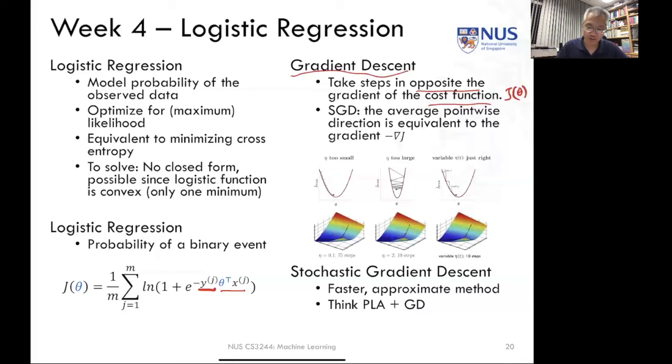However, we also investigated stochastic gradient descent, where we say that the average pointwise direction is actually equivalent to the gradient, such that we can use a single point to make an estimate of the gradient, and use many iterations over a single point to approximate the entire gradient decision. And that would let us arrive at the same point as estimating over the whole gradient, or the whole data set, but take this in a much faster time.